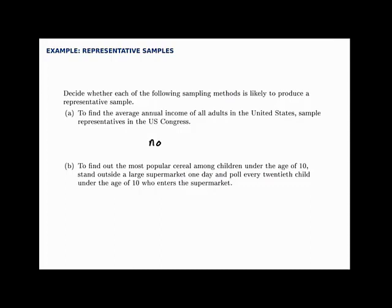The second example: to find out the most popular cereal among children under the age of 10, you could stand outside a large supermarket one day and poll every 20th child under the age of 10 who enters. It's not clear that there's any bias in this one. If you poll children coming into a supermarket of the right age group, you're likely to get a pretty representative sample. You may want to pick different areas of the country, since there could be differences depending on where you look. But without going any deeper, it doesn't look like there are obvious red flags. So this one looks fairly good. The lesson is that when gathering a sample, it's important to look for a representative one — one likely to look similar to your population, not chosen too narrowly or with obvious bias.